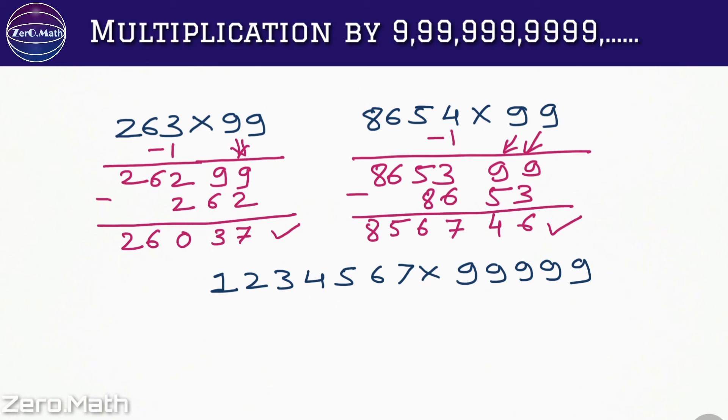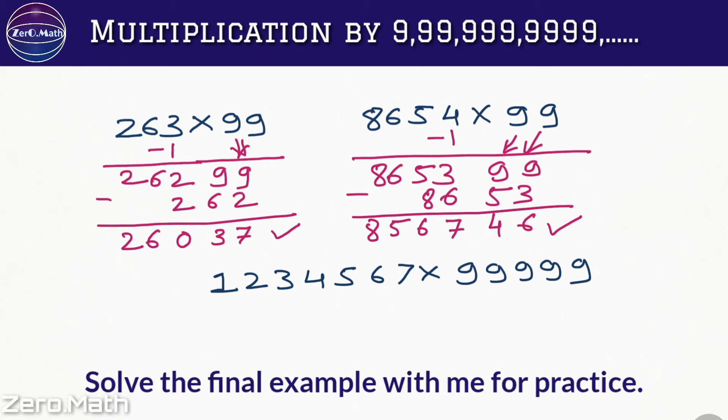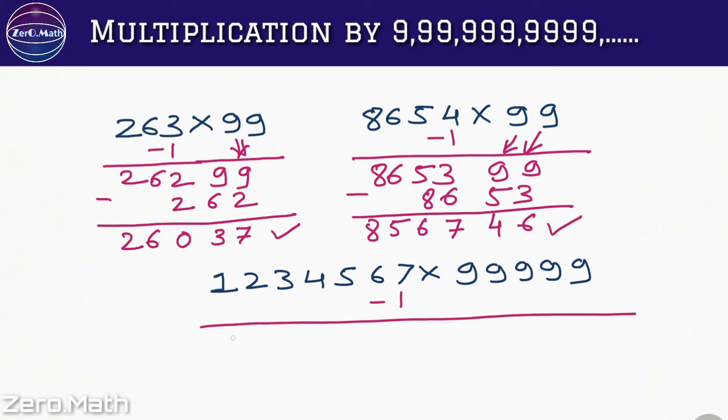Let's solve this final example in this series. Try to solve it along with me for your practice. So subtract 1 from this big number, we will get 1234566. Take this 99999 as it is, and subtract 1234566 from this number.